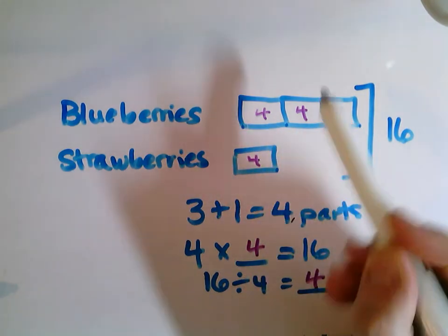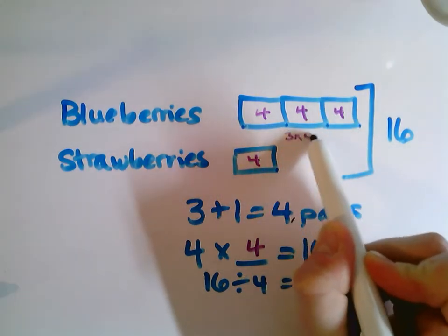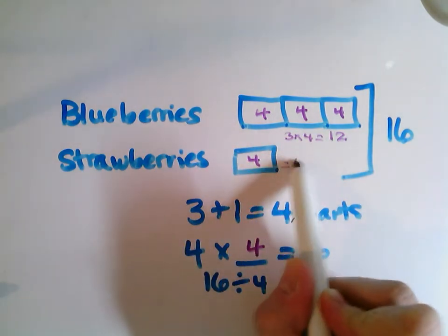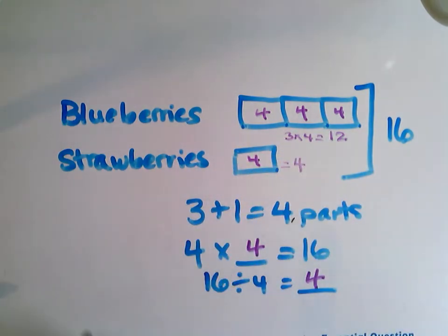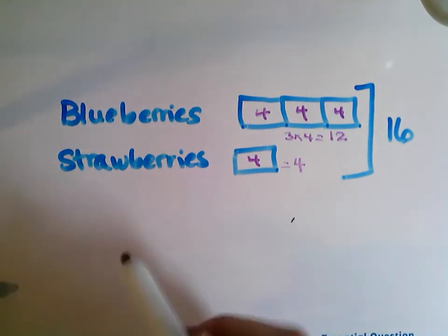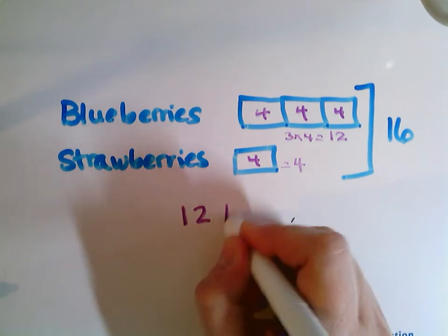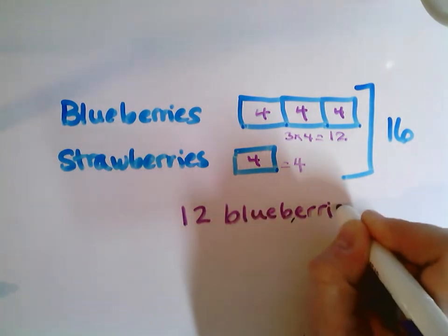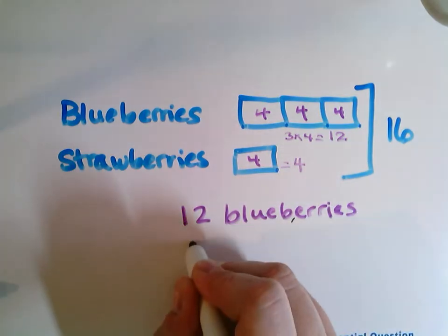So three groups of four, this is three times four is going to give me 12. And here I have one group of four, that's four. So I can see that I have 12 blueberries and I have four strawberries.